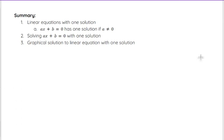So in summary, we talked about linear equations with one solution. If they have one solution, that's because it can be written or was written in the format AX plus B equals 0, where A is not 0. B can be anything, but A cannot be 0.